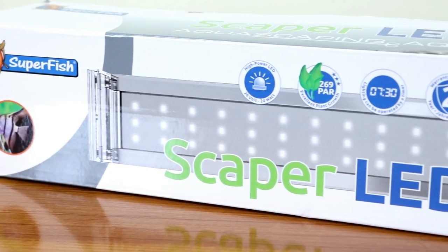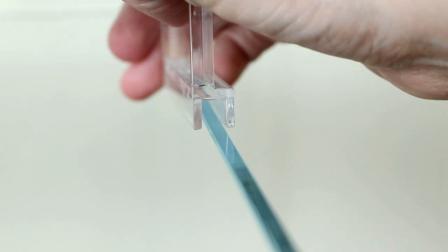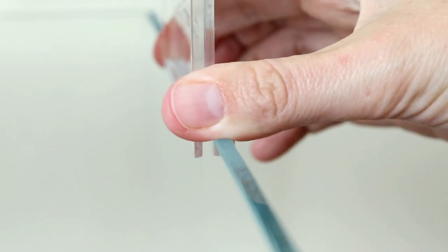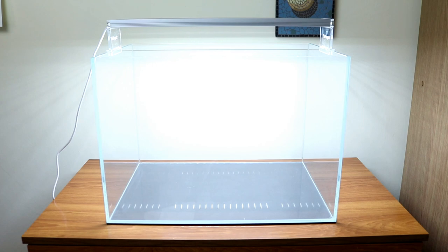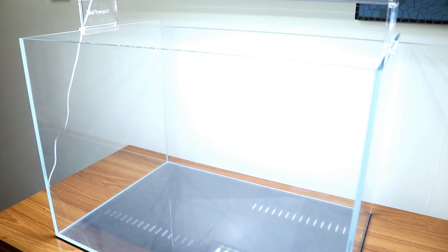The tank also comes with its own purpose designed light in the form of an LED strip that sits very snugly on the top, and this is a really fantastic light. It produces a wonderful spread, it lights up the bottom of the tank completely really easily, and it is very bright.